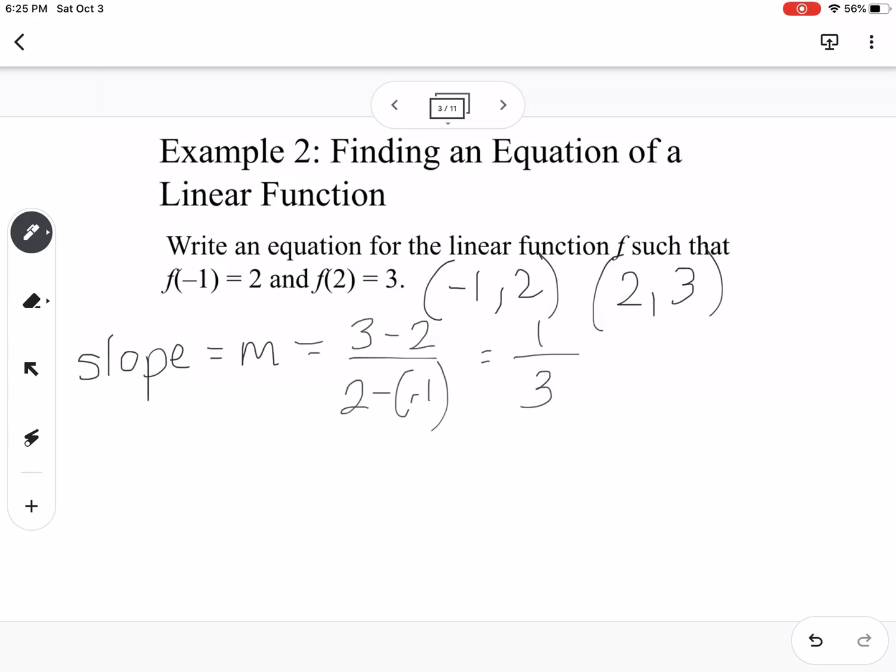So then we can use point-slope form. Point-slope form is y minus y1 equals m times x minus x1. Point-slope form is super helpful when we're doing problems like this because we don't have to try to find the y-intercept. We can just plug it into that and then it will allow us to write the equation.